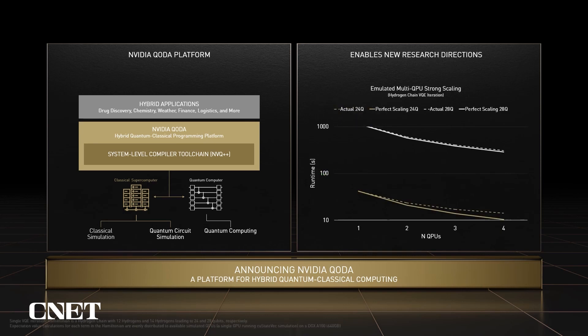CODA also enables exploration of hybrid quantum configurations that aren't practical in the near term. For example, we can execute a CODA program on emulated hybrid resources consisting of multiple GPUs for classical computing and multiple emulated QPUs, to evaluate the benefit of multiple QPUs for scaling quantum algorithms. CODA provides core abstractions for reasoning about the underlying quantum platform and asynchronously executing tasks on available QPUs. In this example, we're simulating a hybrid hydrogen chain using a variational quantum eigensolver and we see near-perfect strong scaling up to four simulated QPUs of 28 qubits each on a DGX-A100 system.